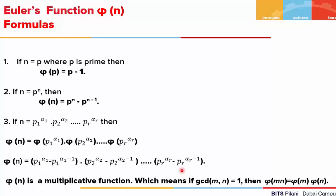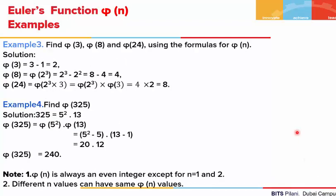We just mentioned phi of n is a multiplicative function. So what are multiplicative functions? Any function is a multiplicative function if for two integers m and n that are relatively prime, phi(mn) = phi(m) × phi(n). If this holds, we say it is a multiplicative function.